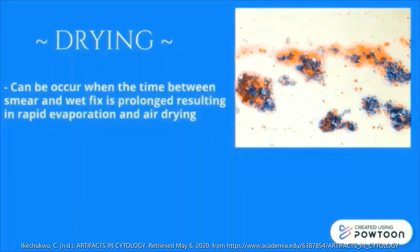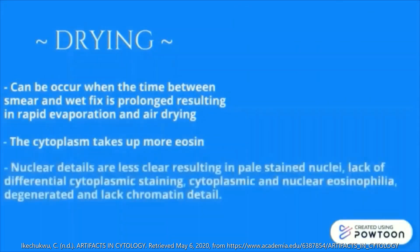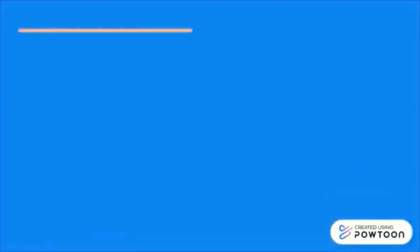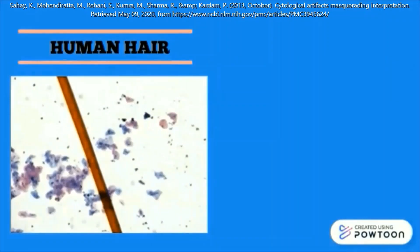Drying can occur when the time between smearing and wet fixation is prolonged, resulting in rapid evaporation. This causes the cytoplasm to take up more eosin and makes the nucleus and chromatin details less clear. The next artifact is human hair.